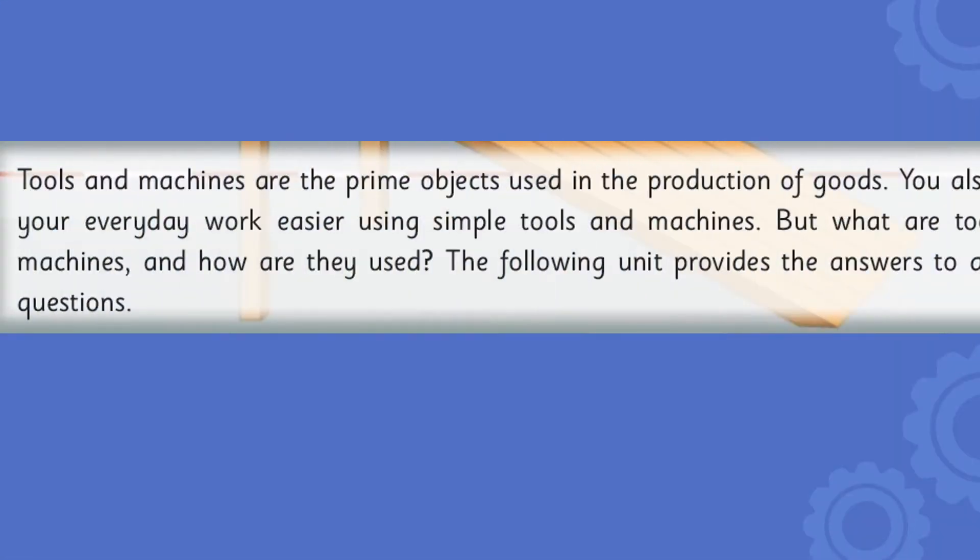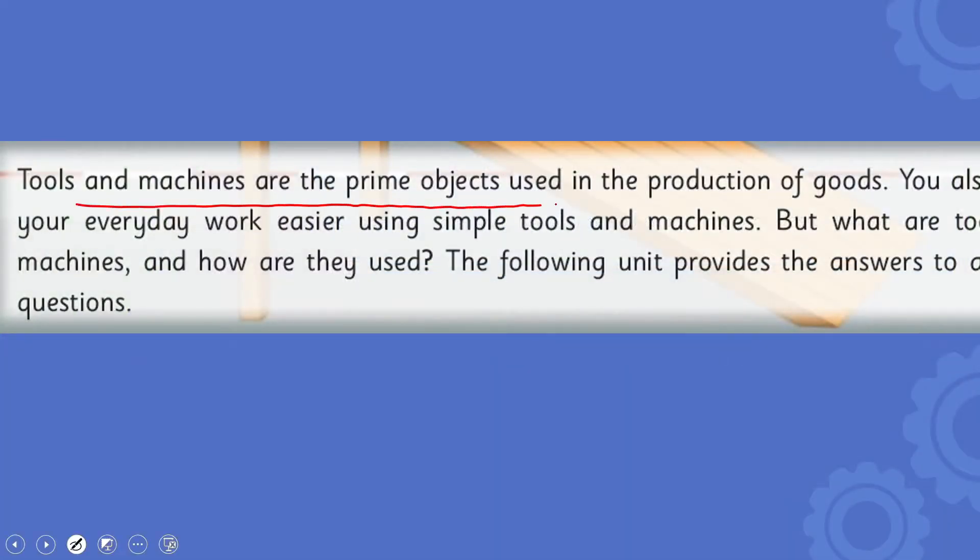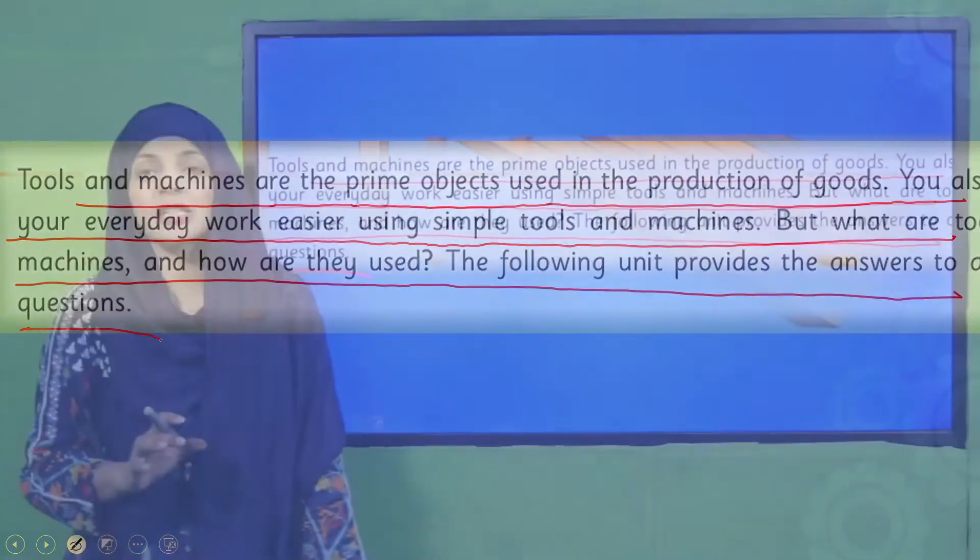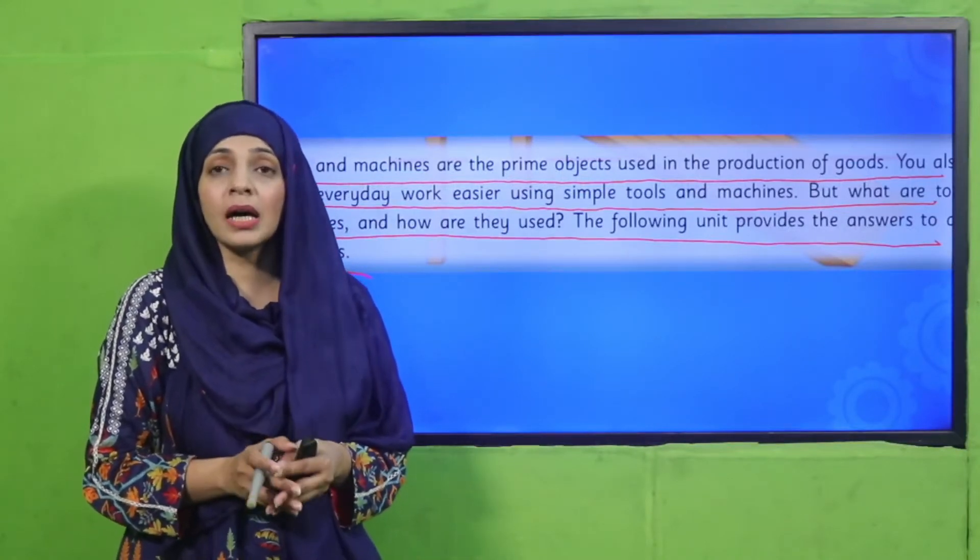So my dear students, let's quickly move forward towards a brief introduction of this unit. Tools and machines are the prime objects used in the production of goods. You all in your everyday work make using simple tools and machines. But what are tools and machines and how are they used? The following unit provides the answer to these questions. So my dear students, on a daily basis you use machines and tools; they make our work easier.